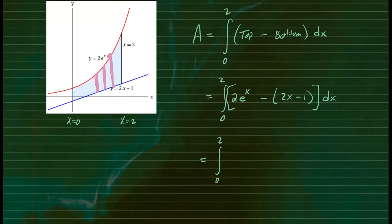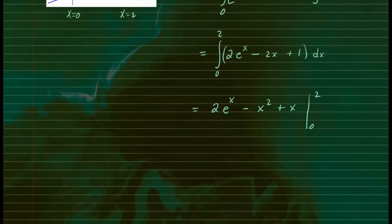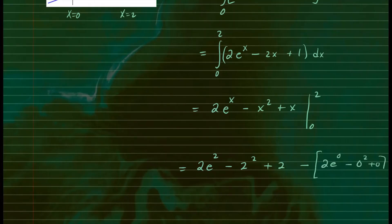Rewriting, we have the integral from 0 to 2 of 2e to the x, and distributing the negative gives minus 2x plus 1, dx. Integrating: the integral of 2e to the x is 2e to the x, the integral of 2x using the power rule is x squared, and the integral of 1 is x, evaluated from 0 to 2. Plugging in the upper limit 2: we get 2e to the 2 minus 2 squared plus 2. Then we subtract the lower limit: 2 times e to the 0 minus 0 squared plus 0.